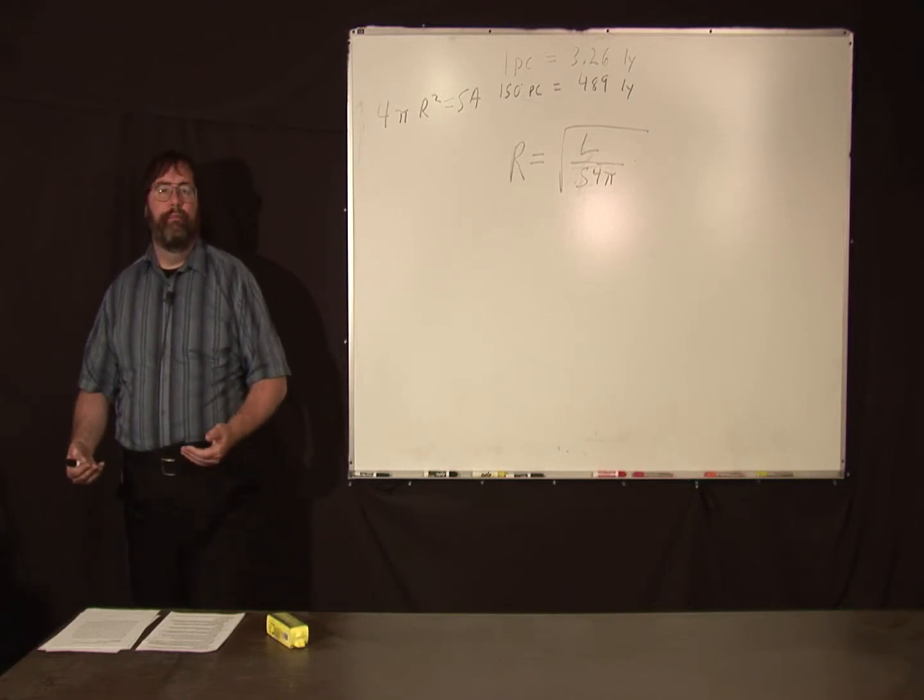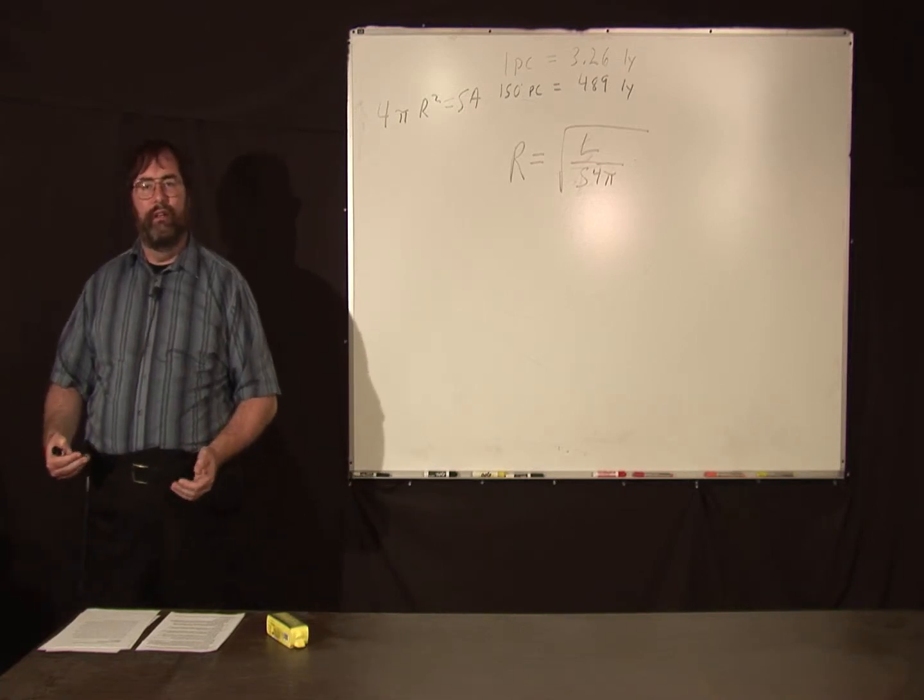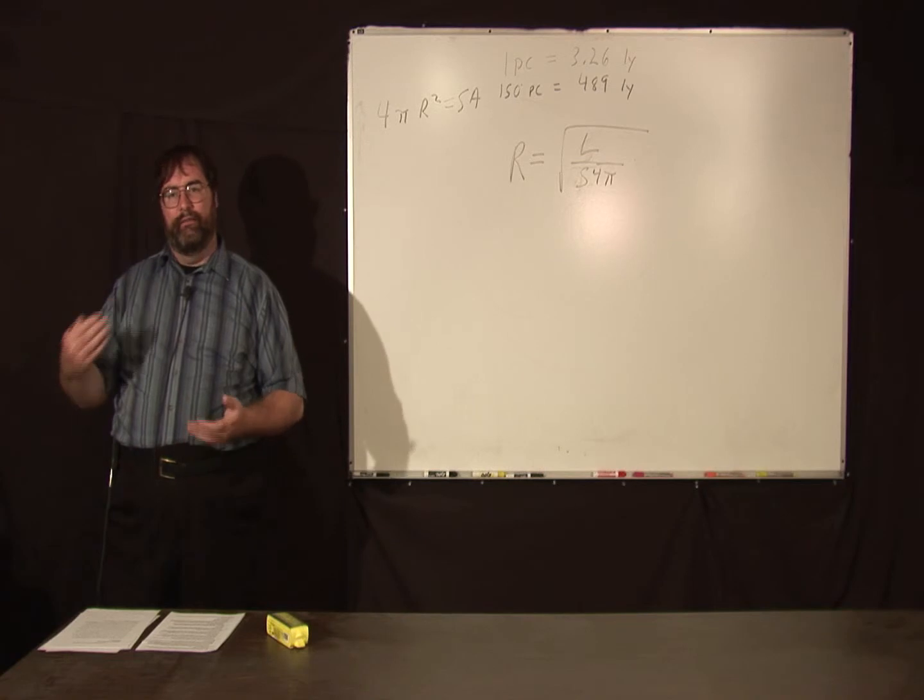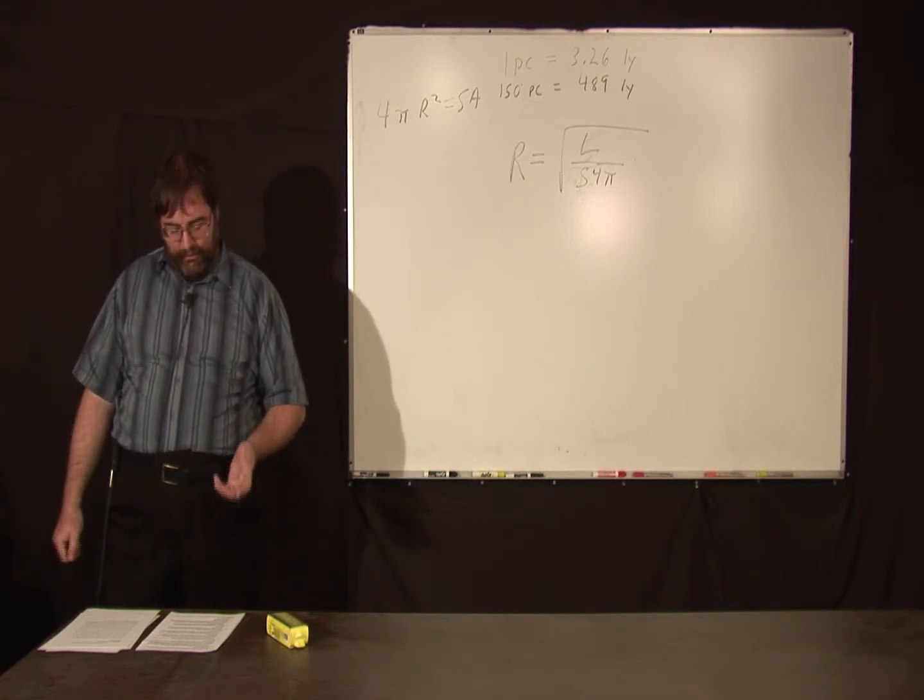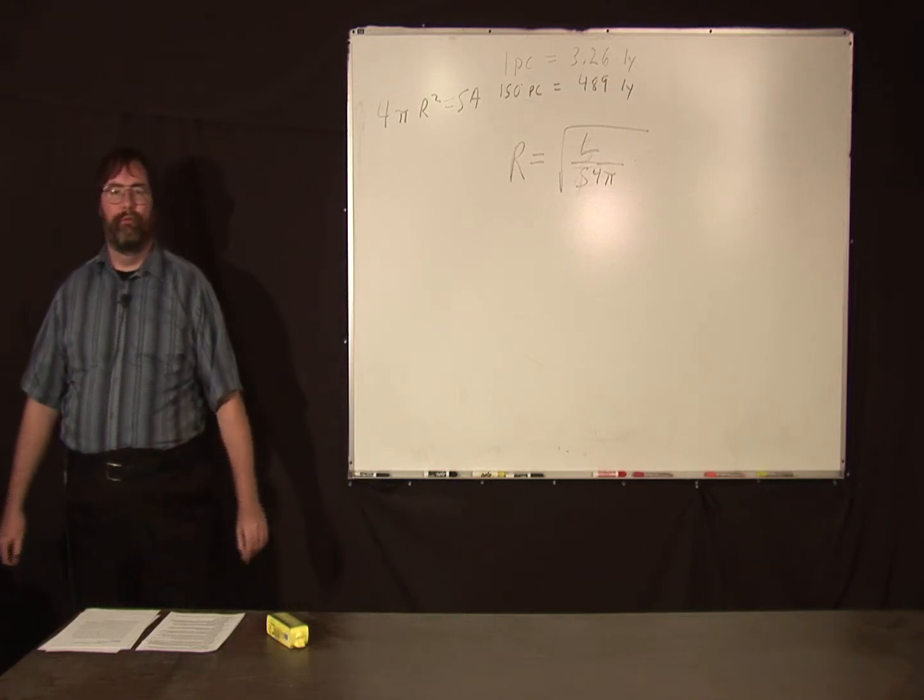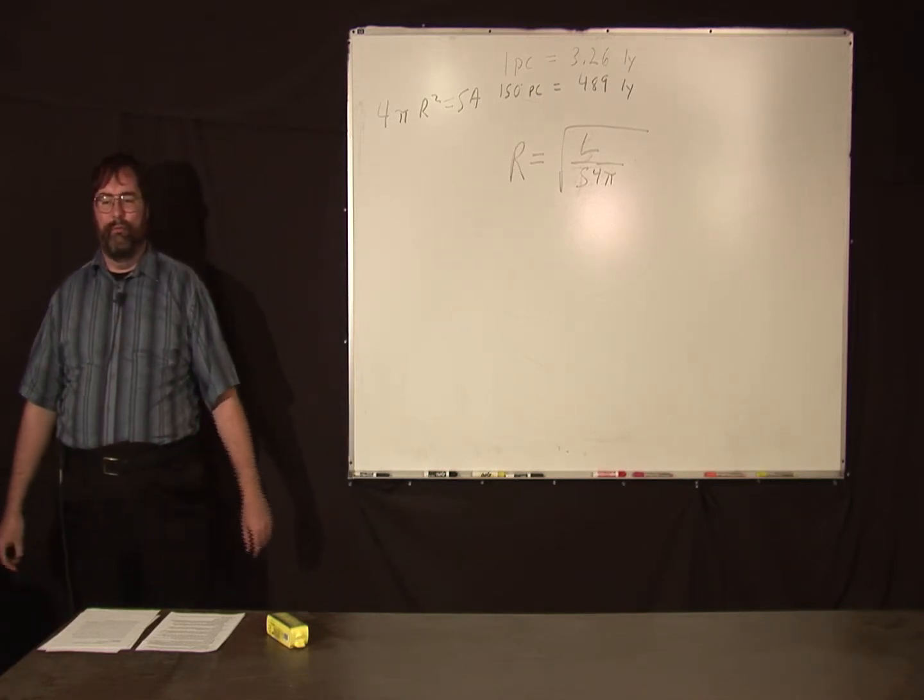So you could look at the average brightness of a galaxy. You can use the brightness of galaxies to estimate the size of the universe. And the farthest galaxies we've ever seen was in the Hubble Deep Field image. The universe is pretty amazingly large. But before we finish up, we've got to do one more thing.